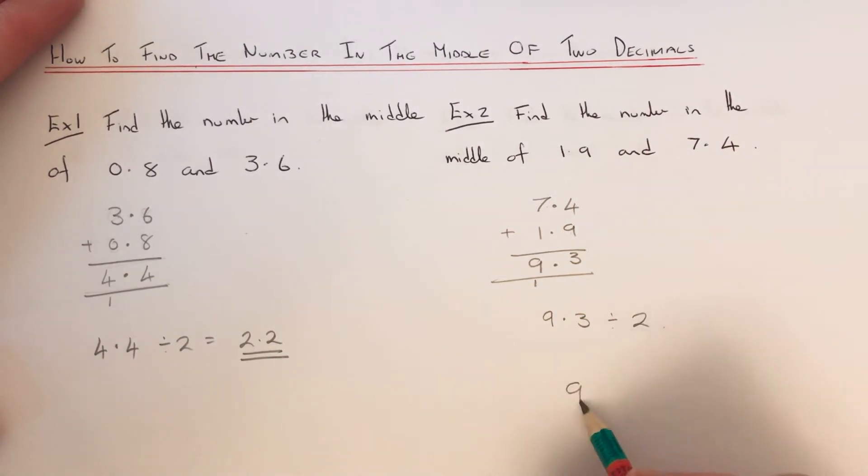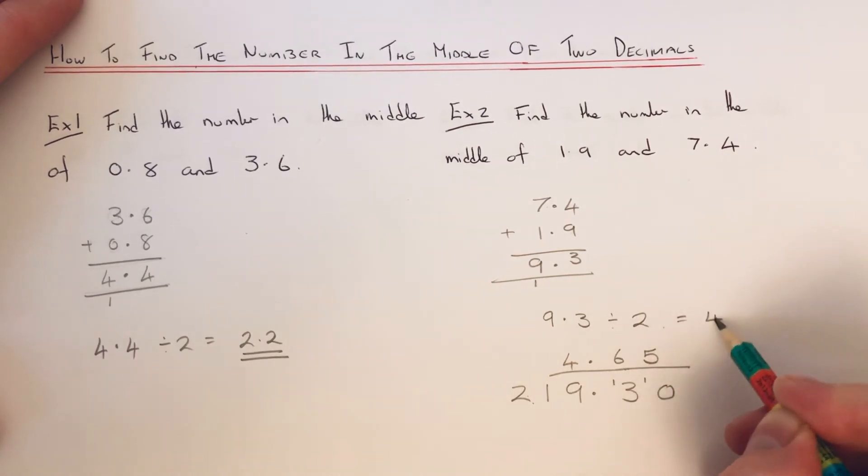So if you can't do this in your head, do a little bit of short division. So 9 divided by 2 is 4, remainder 1. 30 divided by 2 is 6, remainder 1. And 10 divided by 2 is 5. So the final answer is 4.65.